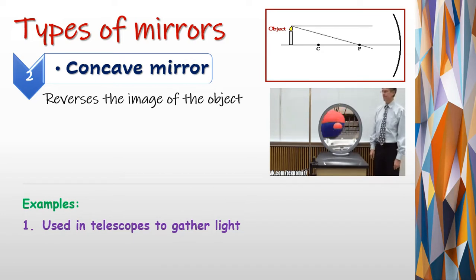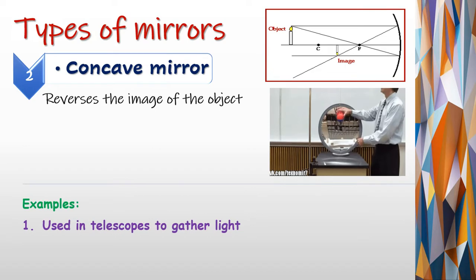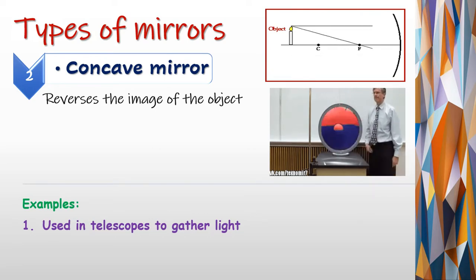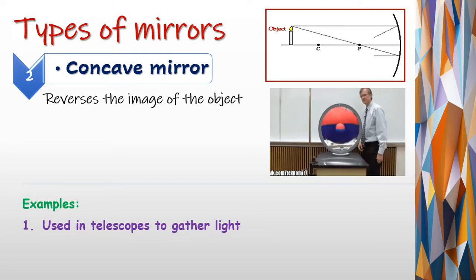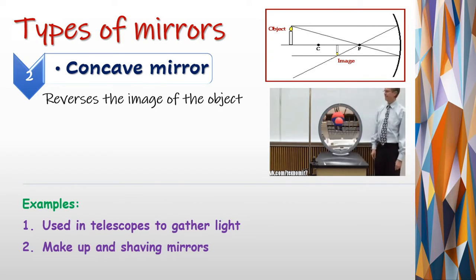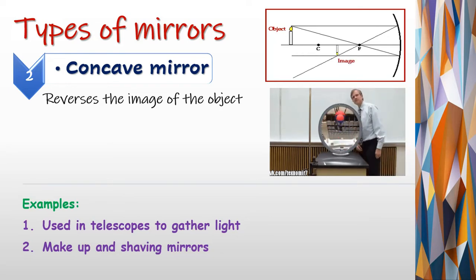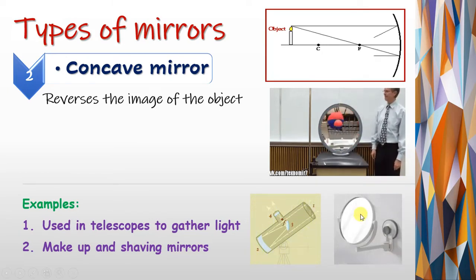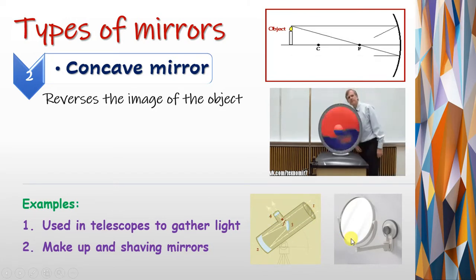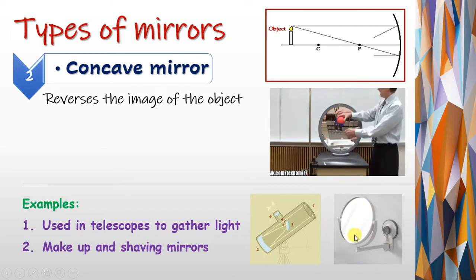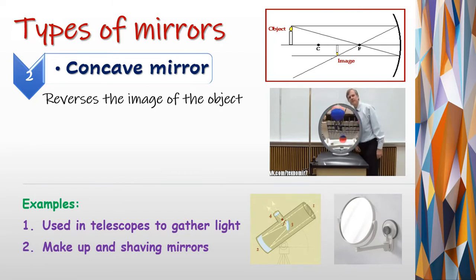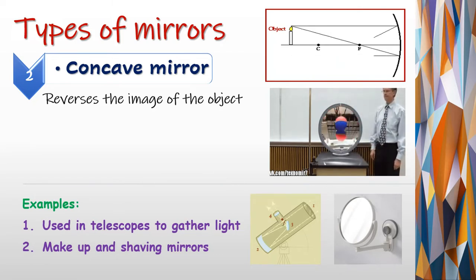We use the concave mirror in the telescope to gather light. Can you remember the telescopes we took before? They are made of mirrors and lenses, and the mirrors in the telescope are concave mirrors used to gather light. Most of us also have concave mirrors at home — in the bathroom — to use for putting on makeup and as shaving mirrors. Close to it, the image is big; away from it, the image is small and reversed.